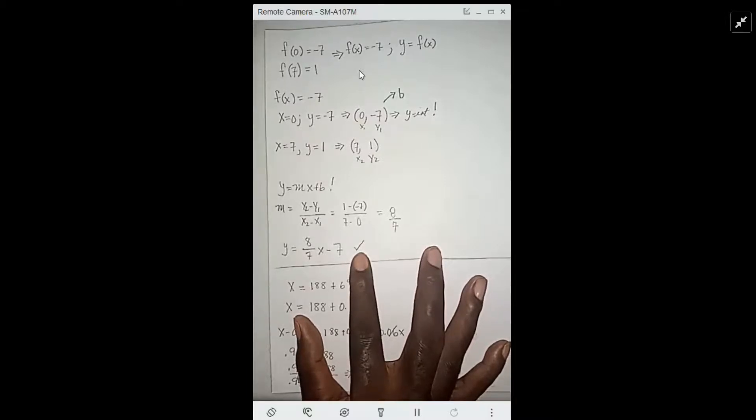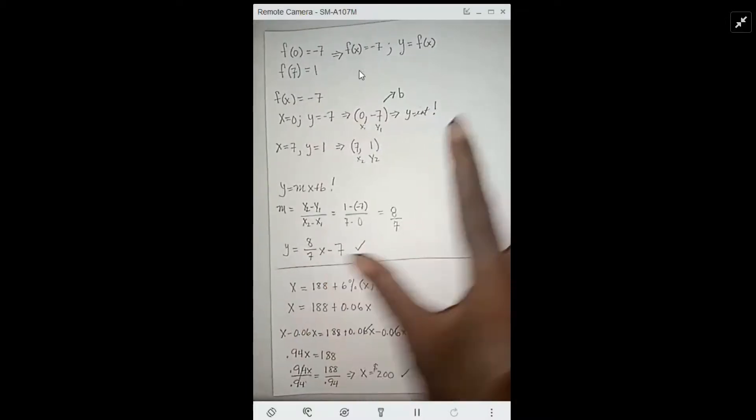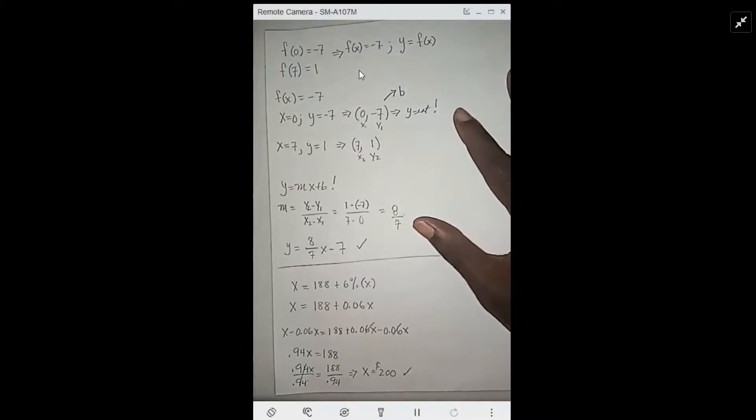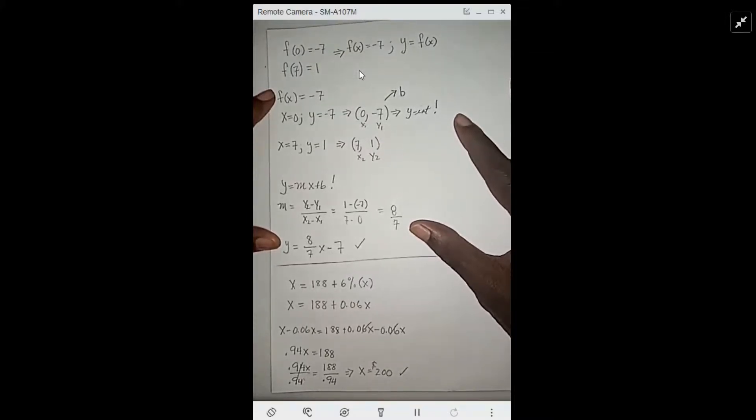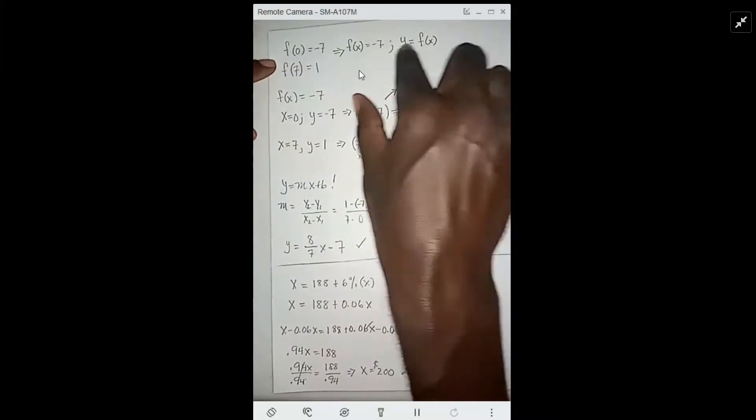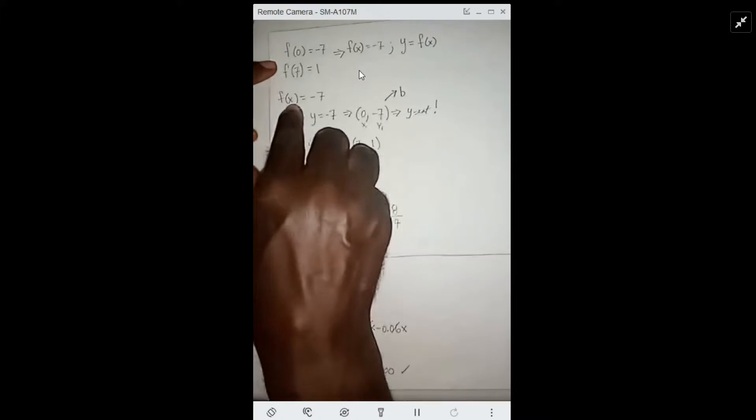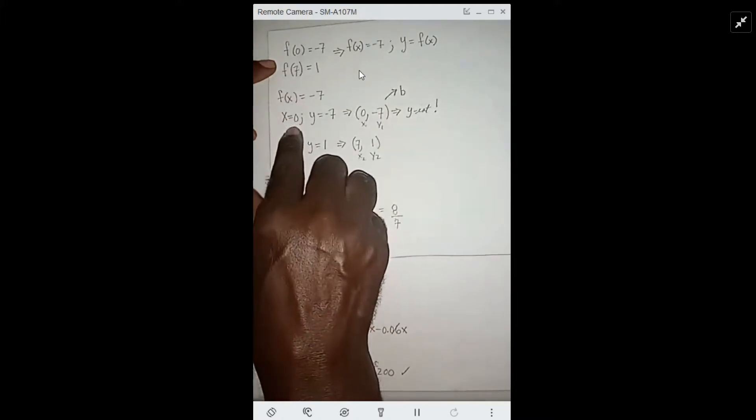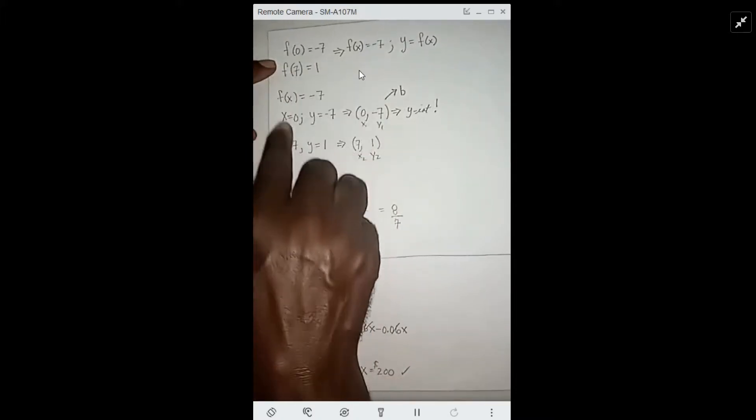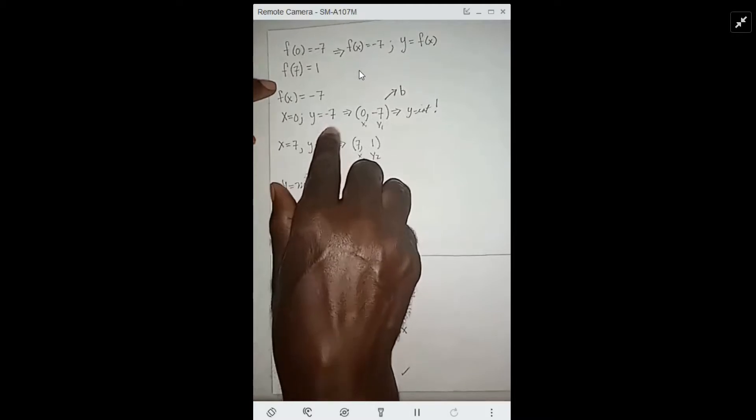The teacher wants to know if you have a deeper understanding of what's going on. Does y equal f(x)? So f(0) means y when x is 0. So y when x is 0 equals -7. That's the type of thought process that goes into it. Sometimes it's not going to be obvious.